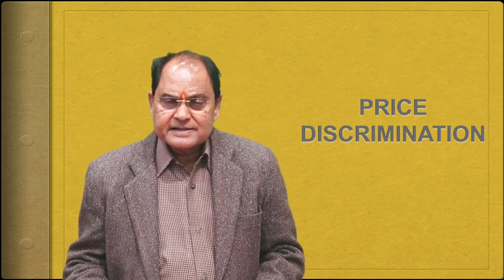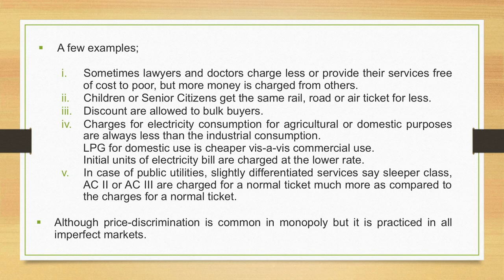Electricity can be used for a very large number of purposes — running trains, lighting homes, heating, cooling, industrial and manufacturing purposes, and agriculture. So it has to be seen what the purpose is, as that is very important. And as mentioned with the train example, different charges apply for a differentiated product, even though the difference in fare can be really very high.